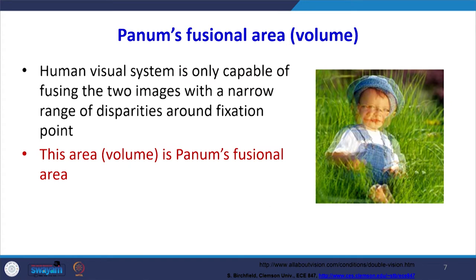This is Panum's fusional area. A human vision system is basically capable of fusing two images — in fact, the fusion of several images. It is called Panum's fusional area, and by changing your eye angle, you can get some kind of 3D impact. This technique is also quite popular to represent 2D images in a 3D environment by superimposing a very large number of images.